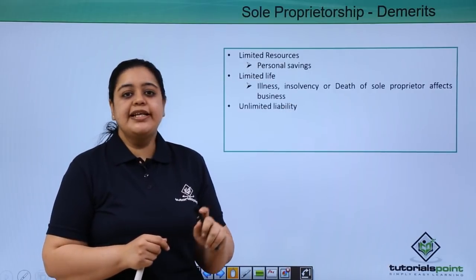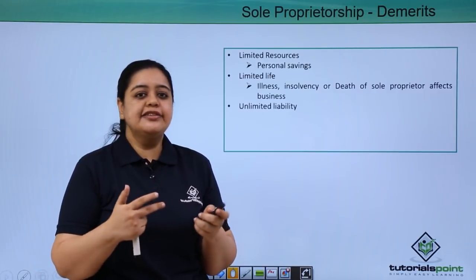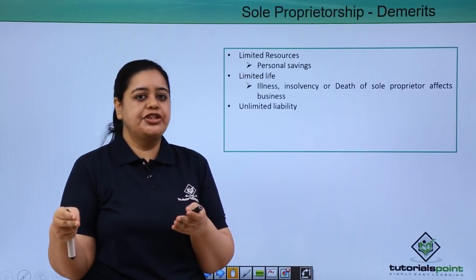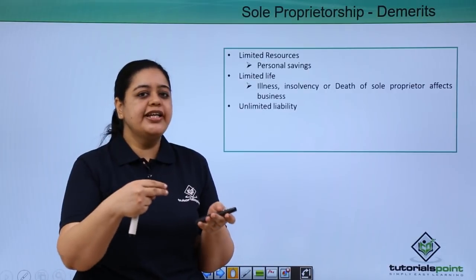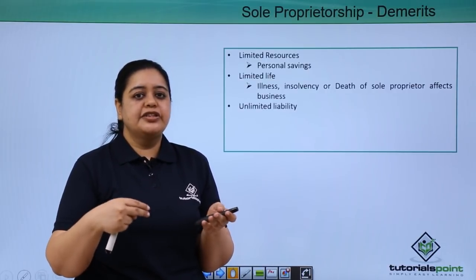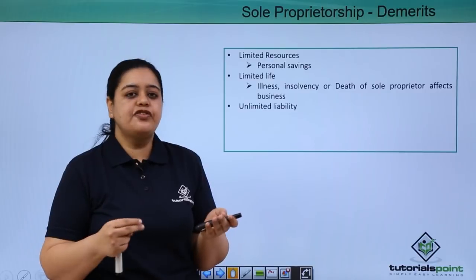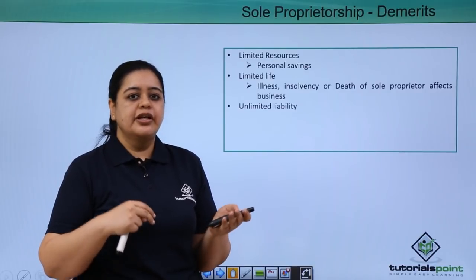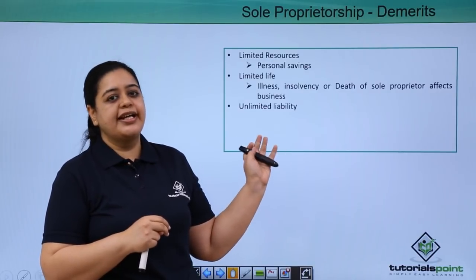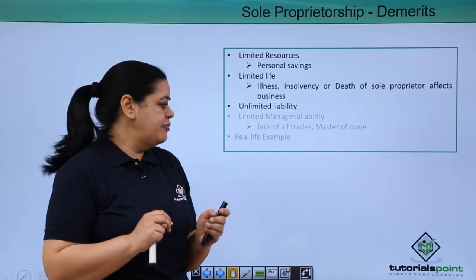The next demerit is unlimited liability. As already discussed in the example about creditors: if ₹1 lakh was due to creditors and she only had ₹50,000 as business income, she will have to pay the remaining ₹50,000 from her own personal savings. This is a demerit — they have unlimited liability.